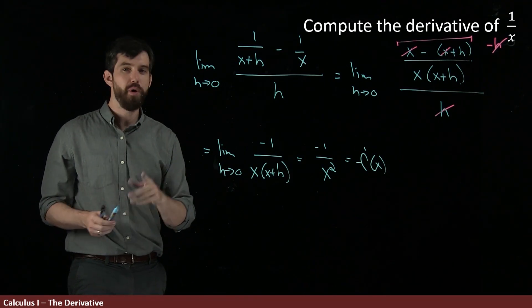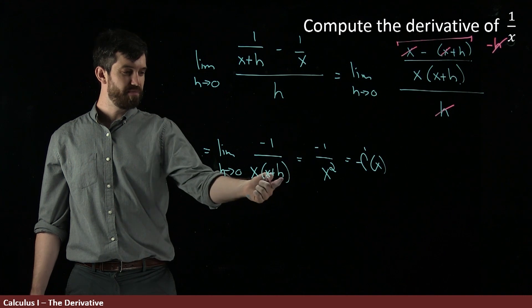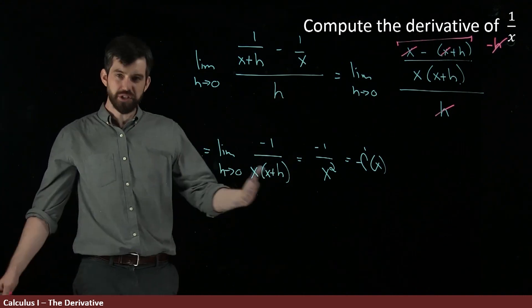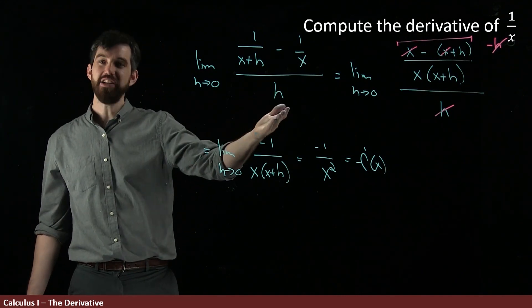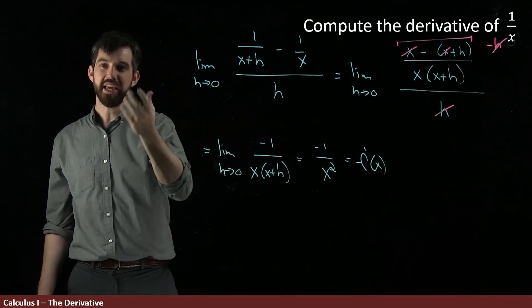I want to be clear. You might say, well, hold on, Trevor, if at this final step, you just made h equal to zero, why didn't you just make h equal to zero at the beginning at the first step? Well, I'm not allowed to do that because this division by h on the bottom here means that I'd have a division by zero. I can't just naively plug it in.